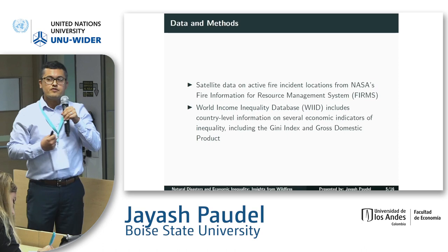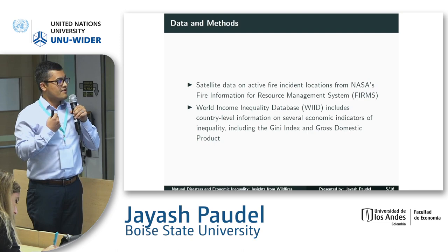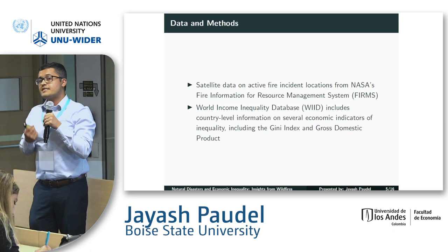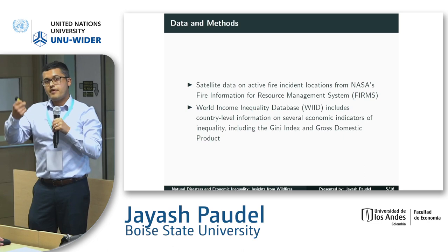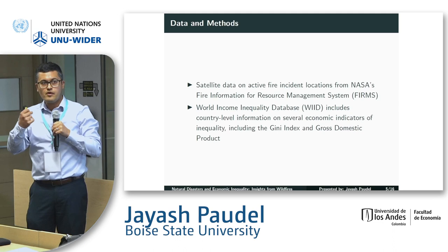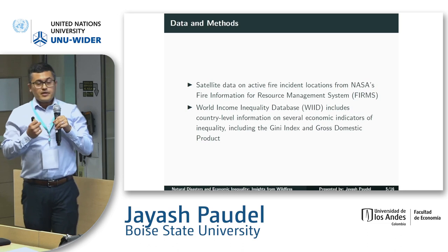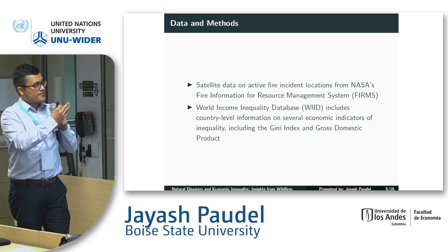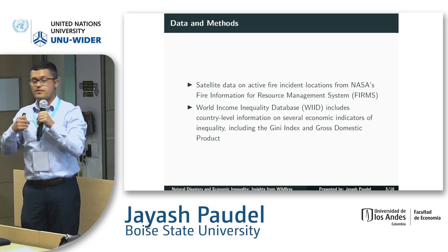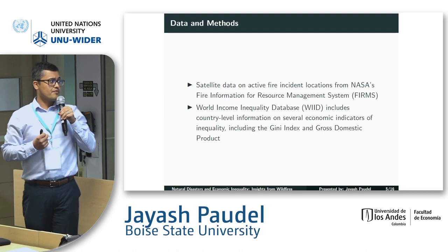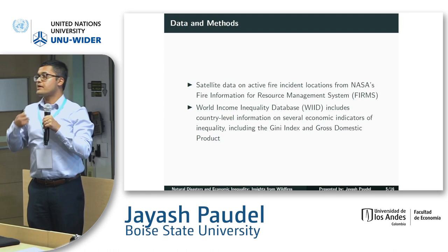In terms of the data, there are two different sources I take advantage of. The first is satellite data on active fire incident locations available from NASA's FIRMS database. It has information on longitude and latitude, when the fire happened, the brightness of the fire, the temperature, and fire radiative power, as well as whether the fire happened at night or daytime. I aggregate these fire events at the country-year level because the inequality indicator is available at that level. That's where the World Income Inequality Database comes in, which has rich country-level information on the Gini index, GDP, and other relevant indicators.